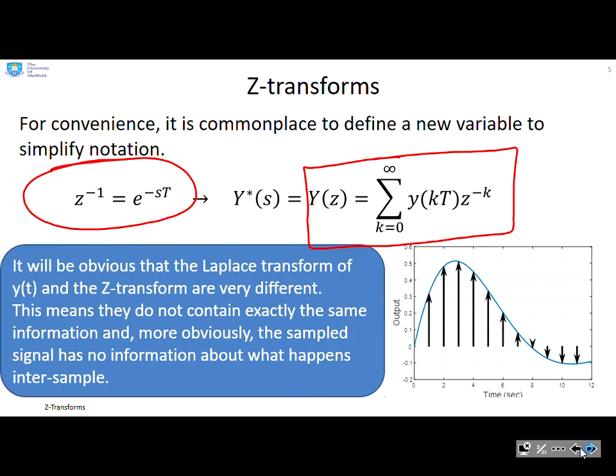It will be obvious that the Laplace transform of y(t) and the Z-transform are very different, because they don't contain the same information. The sampled signal has no information about what has happened between samples — we know what's happened at each sample point, but we do not know what has happened in between.